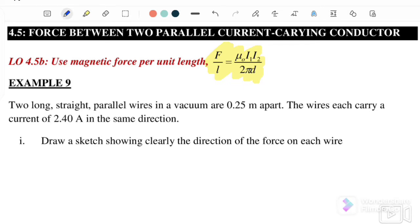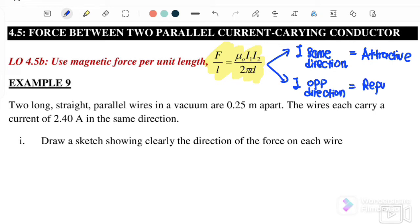The directions of the force: if the current flowing through these two conductors are in the same direction, both wires will experience an attractive force. Whereas if the currents flow in opposite directions, the two conductors will experience a repulsive force. This is how we determine the directions of the forces acting on these two parallel current-carrying conductors.